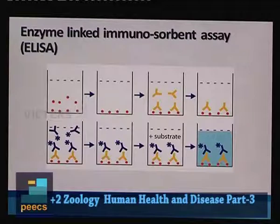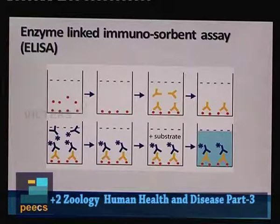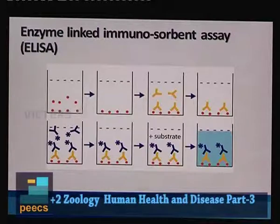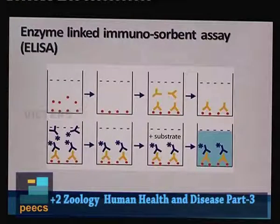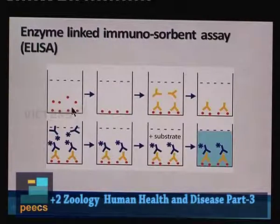DAC ELISA involves direct antigen coating, while DAS ELISA involves a double antibody sandwich — another method of detecting HIV infection. In DAC ELISA, the first step is immobilizing the HIV antigen from the serum collected from a suspected person by coating it on a microplate. In the next step, antibodies specific to HIV antigen are added, and they form an antigen-antibody complex.